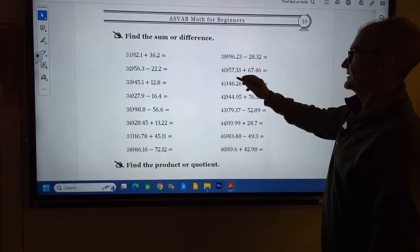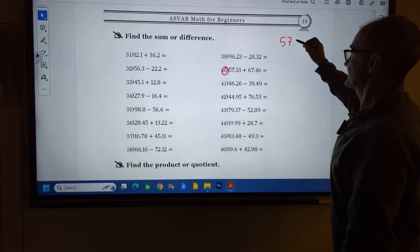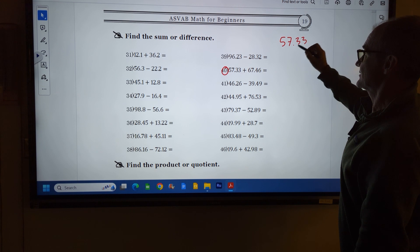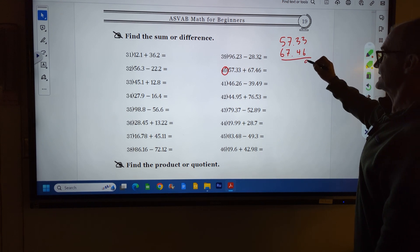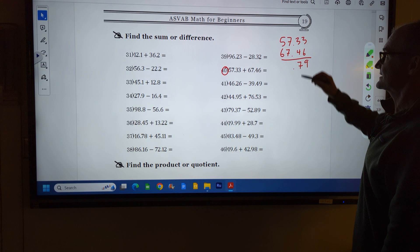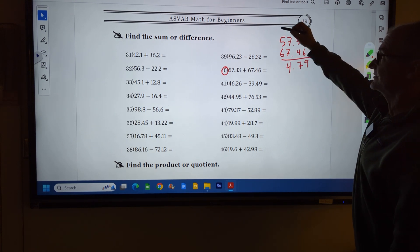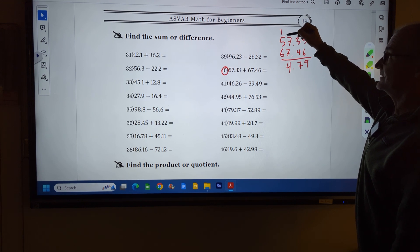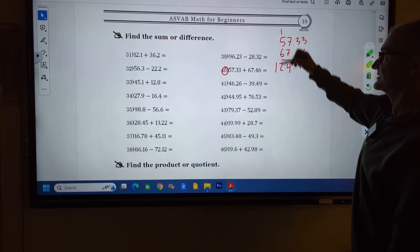Number 40: 57.33 plus 67.46. 3 and 6 is 9, 3 and 4 is 7. Decimal place. 7 and 7 is 14. I have to carry the 1. 1 and 5 is 6, 6 and 6 is 12. There's no place to carry the 1.